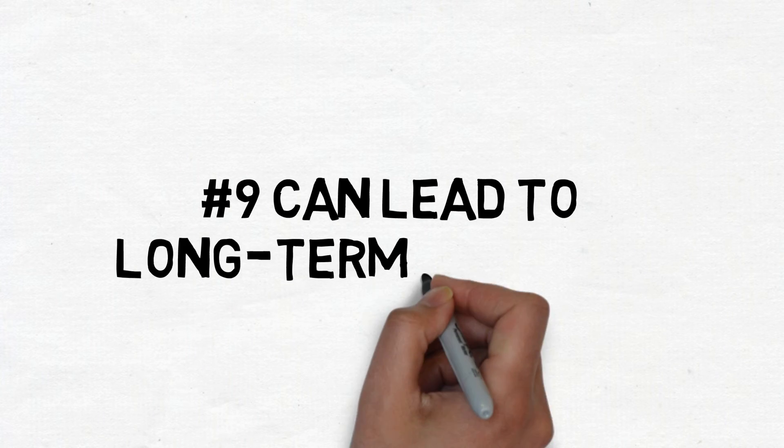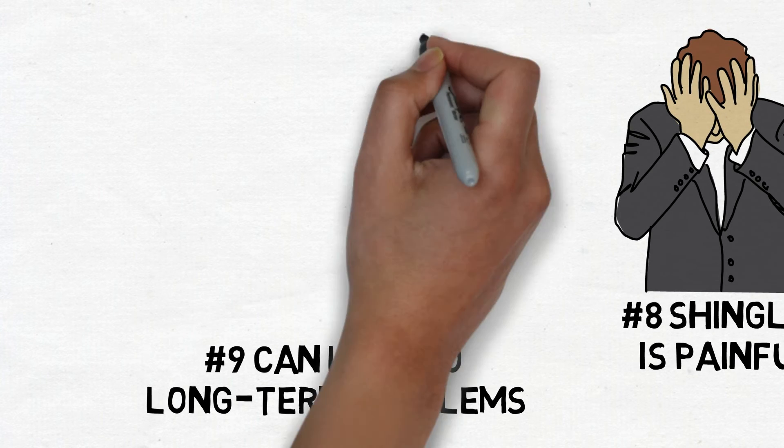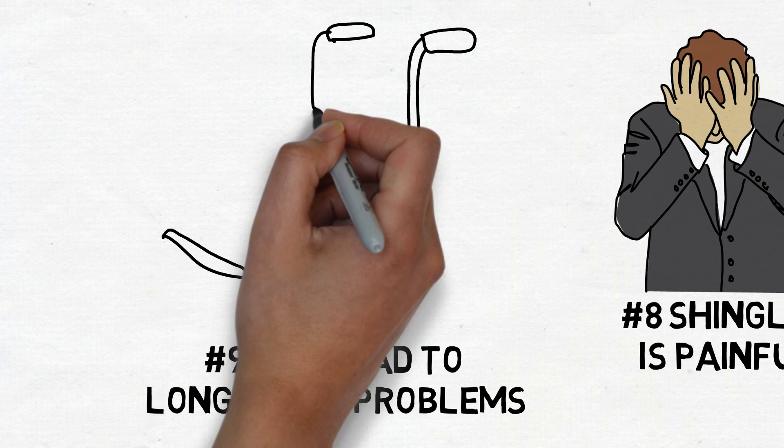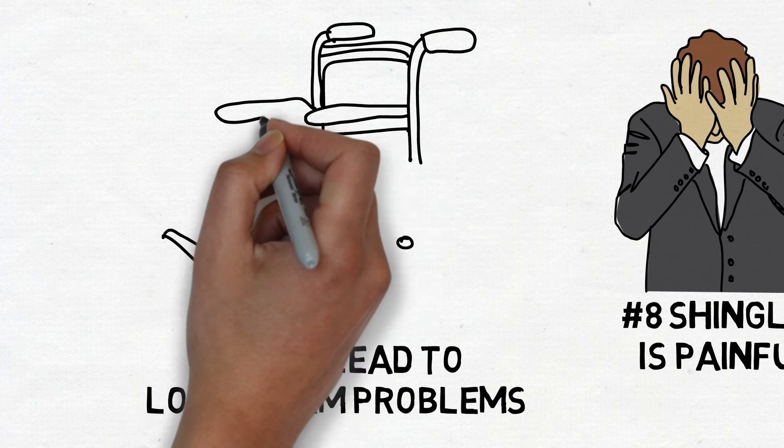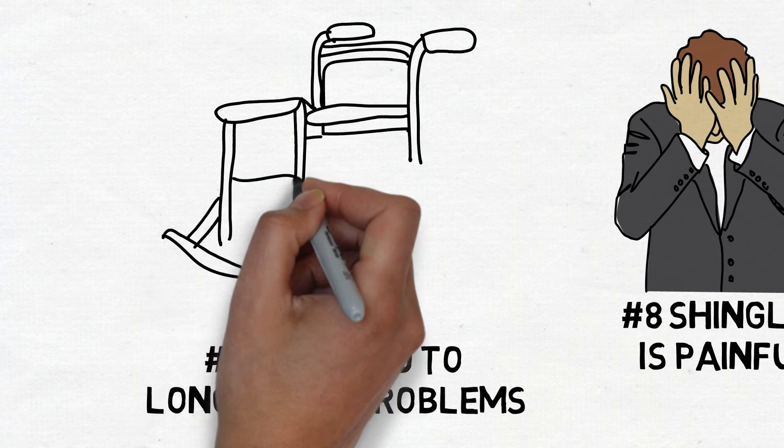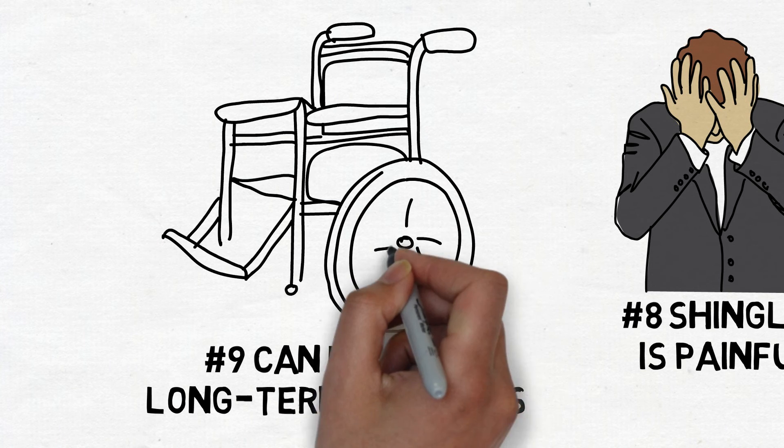Number nine: Shingles can lead to long-term problems. Although most cases clear up within a few weeks, about 40% of cases progress into a condition known as post-herpetic neuralgia, also known as PHN.